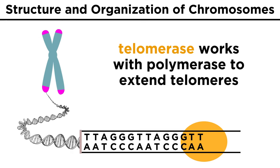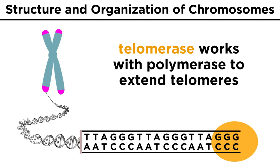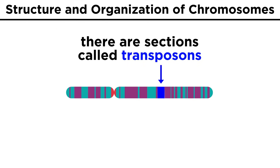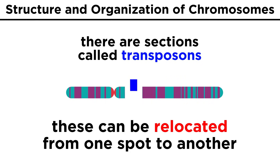In some cells, an enzyme called telomerase regularly extends the telomeres, which buys a cell a little more time. Beyond telomeres, some areas of non-coding DNA are called transposons — sequences that can change position within a genome.